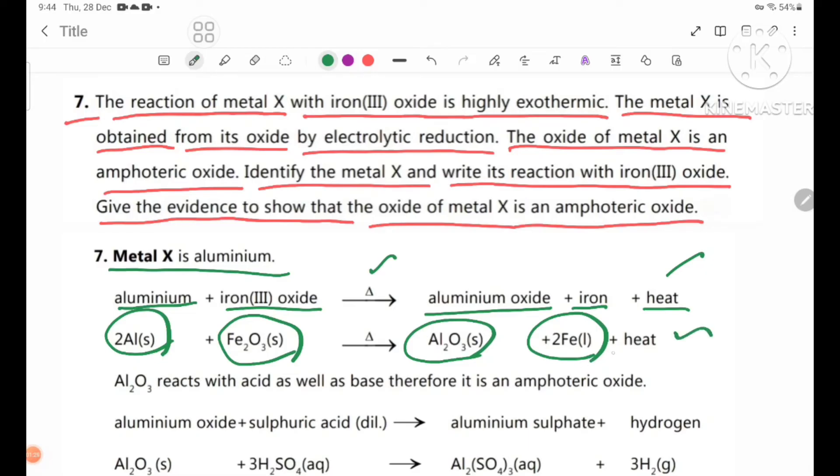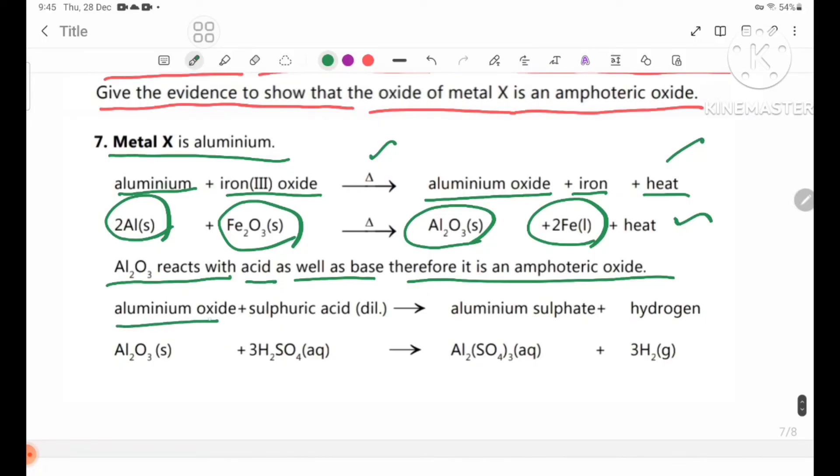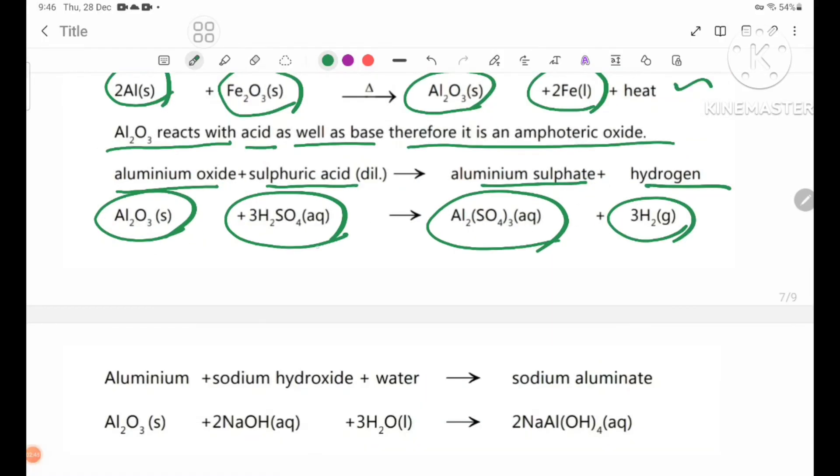Al2O3 reacts with acid as well as base, therefore it is an amphoteric oxide. Aluminum oxide reacts with sulfuric acid: Al2O3 solid plus H2SO4 aqueous forms Al2(SO4)3 aqueous plus H2O.